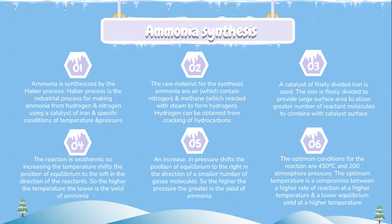A catalyst of finely divided iron is used. The iron is finely divided to provide a large surface area to allow a greater number of reactant molecules to combine with the catalyst surface. The reaction is exothermic, so increasing the temperature shifts the position of equilibrium to the left in the direction of the reactants. Therefore, the higher the temperature, the lower the yield of ammonia.